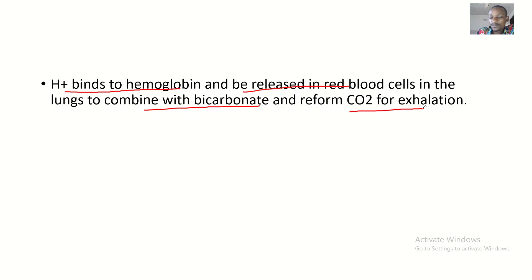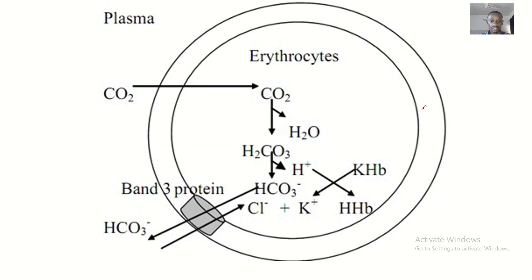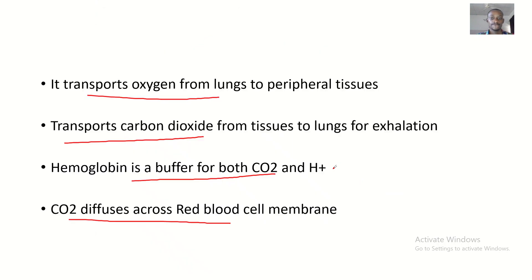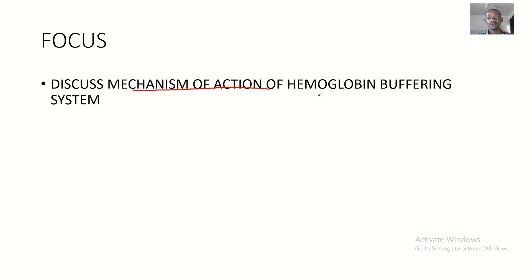It will form a water molecule (H2O) and release CO2 for exhalation. So to summarize: CO2 binds with water to give carbonic acid, carbonic acid dissociates into H+ and HCO3-. When H+ and HCO3- recombine, they form H2O and CO2. That's the mechanism of action of the hemoglobin buffering system.